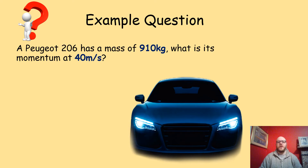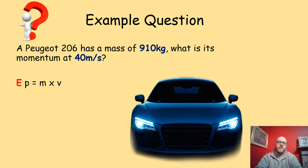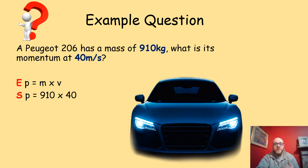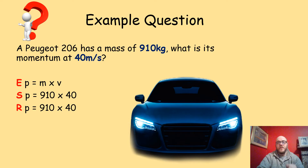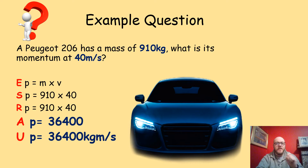Here is an example question. A Peugeot 206 has a mass of 910 kilograms. What is its momentum if it's traveling at a velocity of 40 meters per second? We do SROE. Write the equation: P equals MV, momentum equals mass times velocity. Substitute in the numbers: P equals 910 kilograms multiplied by 40 meters per second. No rearrangement needed — P equals 910 times 40, which gives a momentum of 36,400 kilograms meters per second.